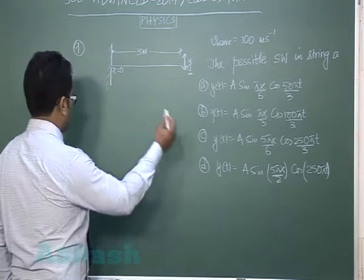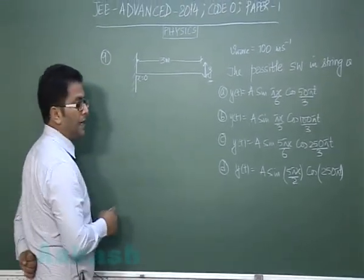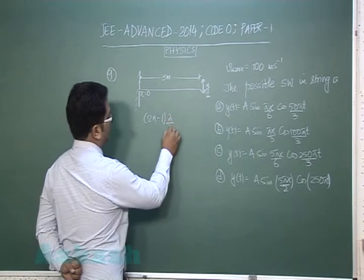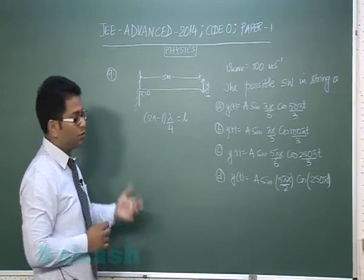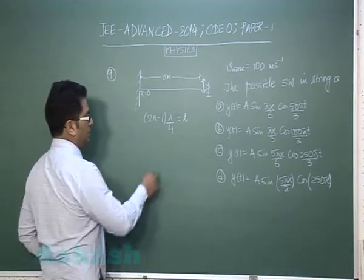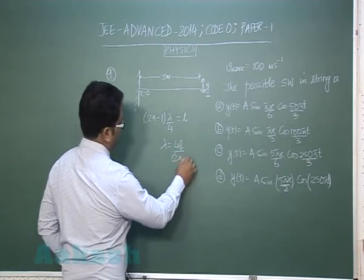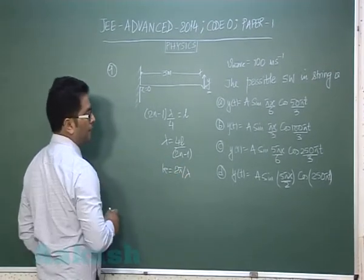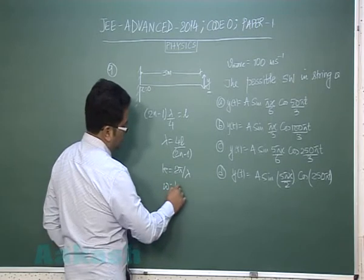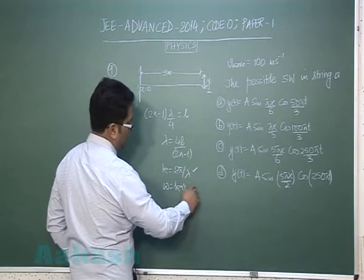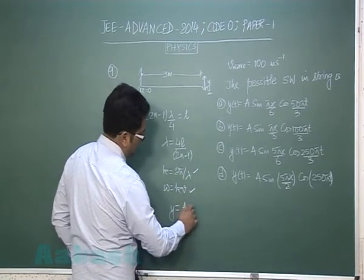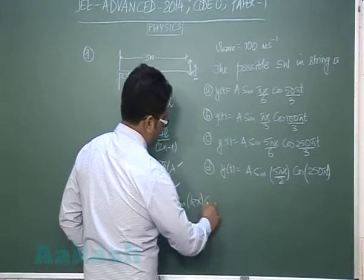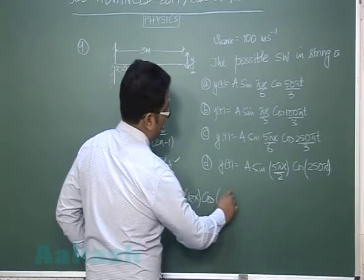Now the second option to be checked is let us try to go with k and you could see here that 2n minus 1 lambda by 4 equals to l because l is either lambda by 4, 3 lambda by 4, 5 lambda by 4 and you would see lambda is 4l by 2n minus 1 so k would be equals to 2 pi by lambda and you would also see omega is equal to kv so we got k we got omega so y now would be equals to a sin kx cos omega t.